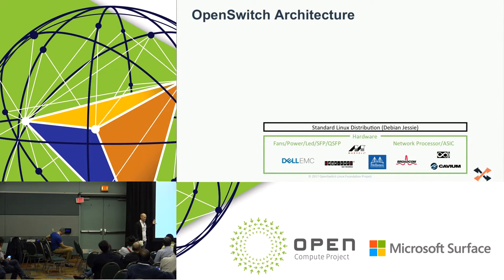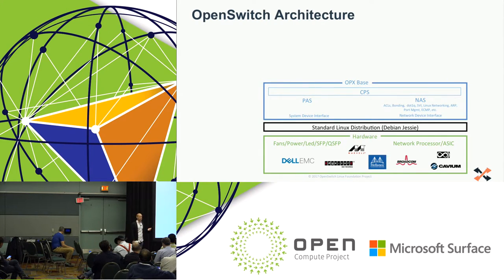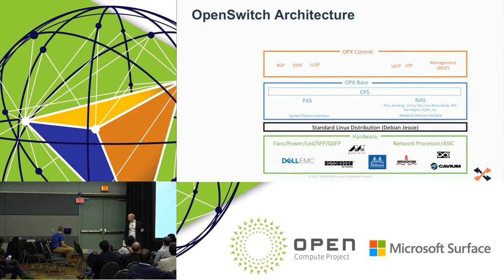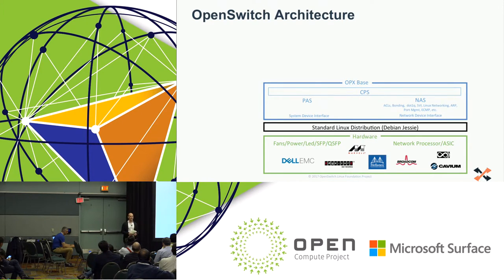On top of that hardware, we have a standard Linux distribution — unmodified — so you can do your apt-get installs of standard tools and applications. If you wanted to run Docker or VirtualBox, it's all available as long as you have the space and capacity on your switch. You have access to all the tools you're familiar with from your server environments. On top of that standard Linux distribution, we have something called the OPX base, which ties in the specific switching hardware and switching ASICs into standard Linux, giving you that tie-in capability.